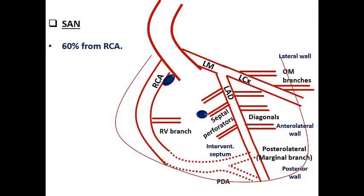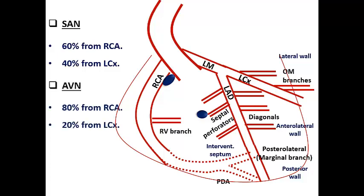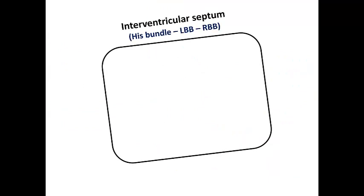Regarding the conductive system: the SA node lies in the subendocardial region of the right atrium near the SVC insertion. In 60% of cases it receives supply from the RCA, and in 40% from the LCX. The AV node lies in the lower portion of the right atrial septal wall and receives blood supply from the RCA in 80-90% and from the LCX in 20%. This explains why in many cases of inferior STEMI we see variable patterns of sinus node dysfunction or AV blocks.